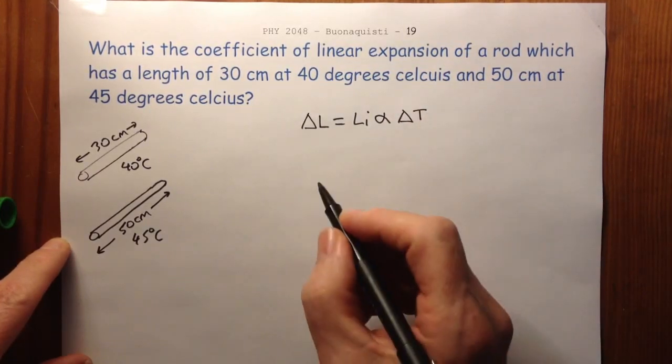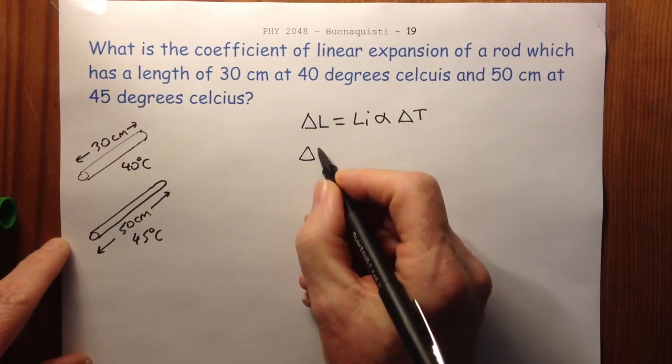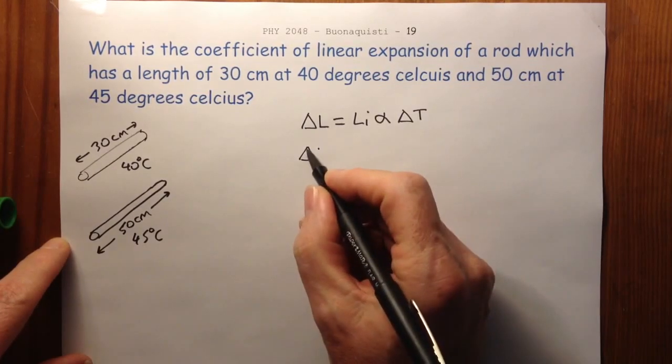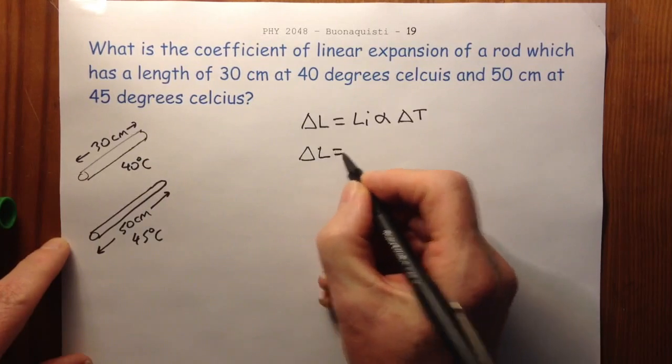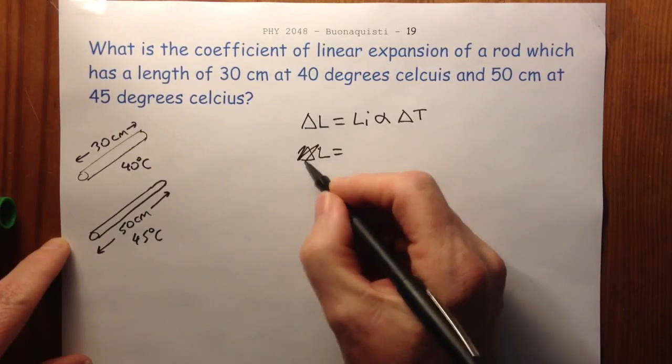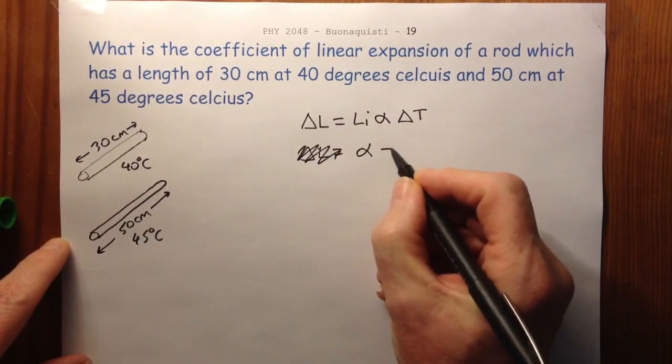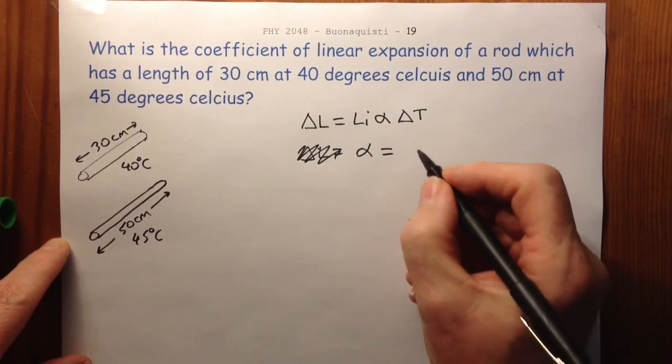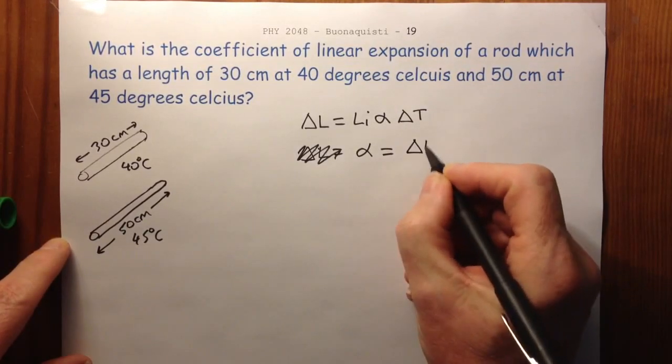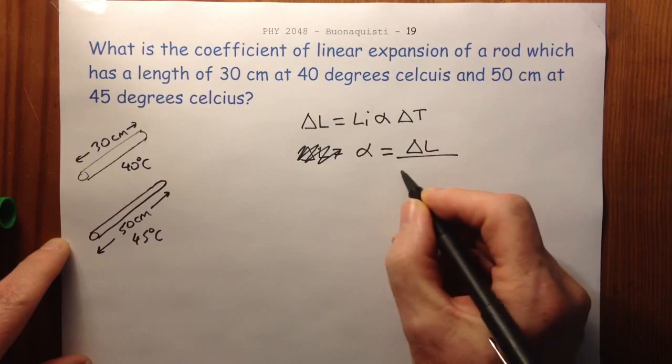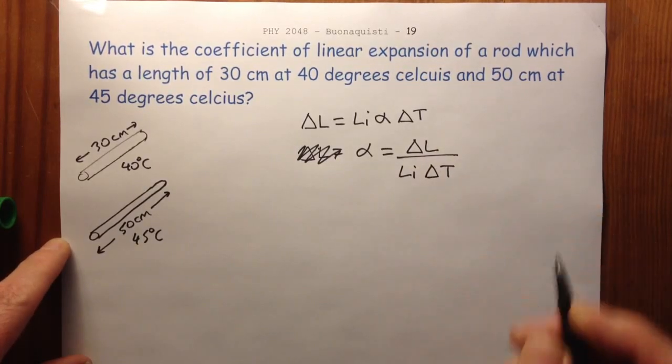So we say, okay, change in length is equal to... well, let's rearrange. Our coefficient of linear expansion is equal to the change in length over the original length times the temperature change.